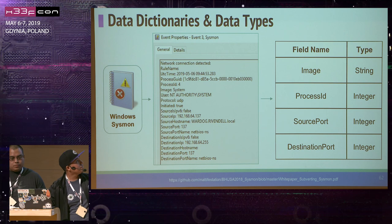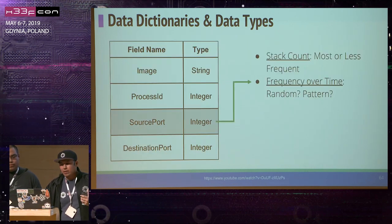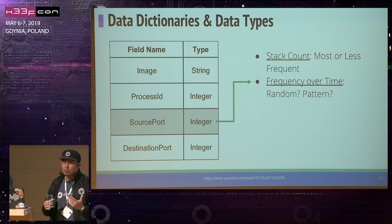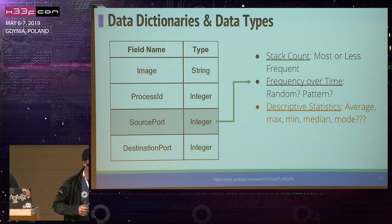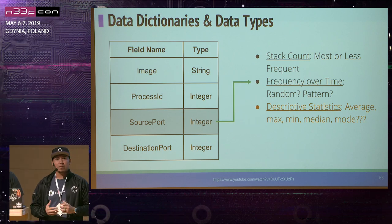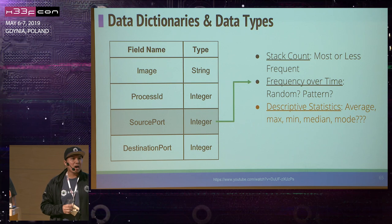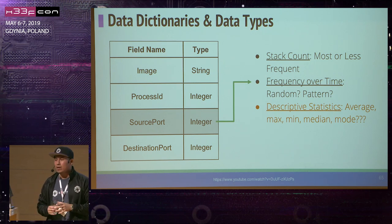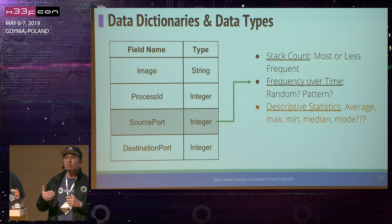You can start by applying the data dictionary concept — which I learned working at Capital One — where you define and understand what you're getting per each event, all the way from field level to field descriptions and data types. This way you understand what you're querying: is this an integer or a string? For example, looking at event ID 3, we have source port and destination port — those are numerical integer values. You can do basic stack counting, see the most/least frequent ports, and trends over time.